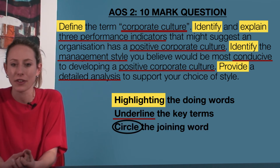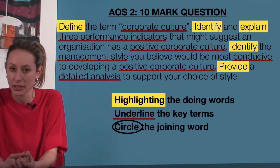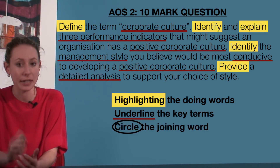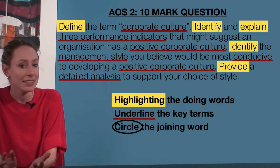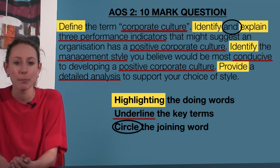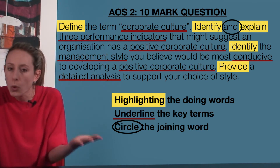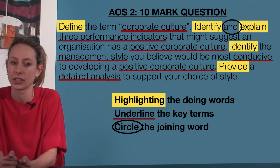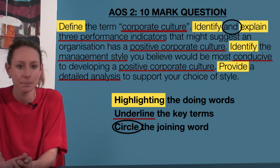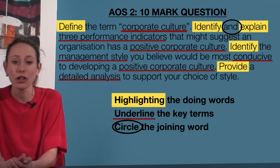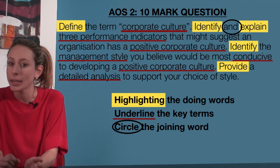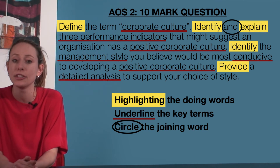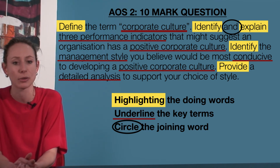Finally, students should identify what the joining word is by circling it. In this case, 'and' is the joining word, meaning that students are required to address all areas of the question in their response to gain full marks. Acknowledging these aspects of the question and marking them on the page can go a long way in ensuring your response is precisely answering the question.